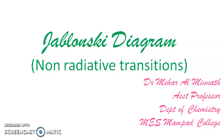Hello all. In my earlier video, we discussed the Jablonski diagram. We touched upon all the various electronic transformations and energy transformations possible when a molecule or an electron absorbs UV-visible radiation. There are various ways by which the absorbed energy is dissipated — the two main categories are radiative transitions and non-radiative transitions.